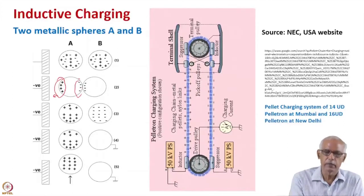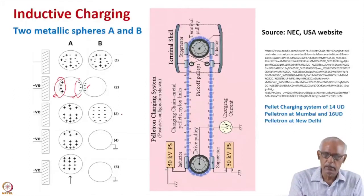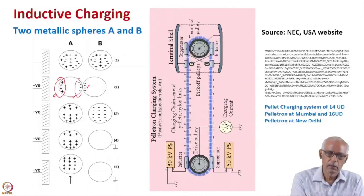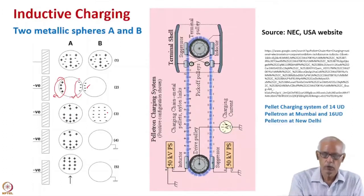Because they are metallic spheres, the negative charge will be transferred to the second sphere. The third stage is that if you remove the second metallic sphere, the two spheres are separated. Positive charge on the first sphere will be uniformly distributed, and the negative charge on the second sphere.